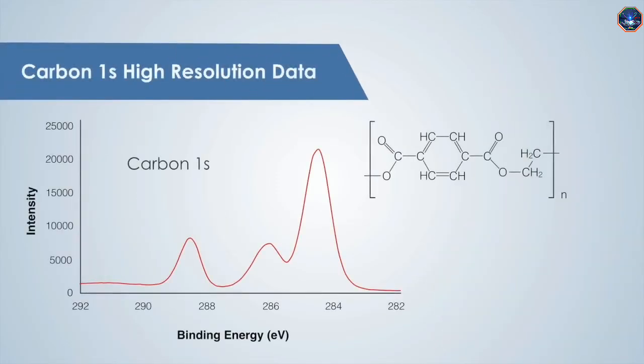Now let's return to the carbon 1s spectrum of PET to assign the peaks. The component at the lowest binding energy is due to the carbon atoms bound to other carbon atoms labeled A. The peak at 286 eV corresponds to the carbon atoms bound to one oxygen atom, marked B. And the peak just above 288 eV corresponds to the carbon atoms bound to two oxygen atoms, marked C.